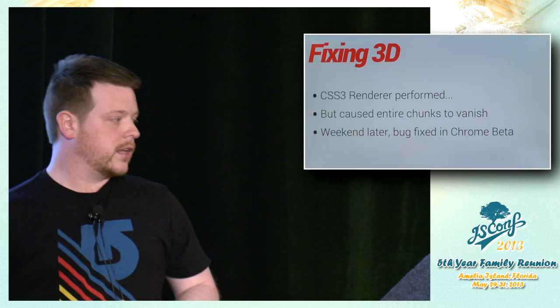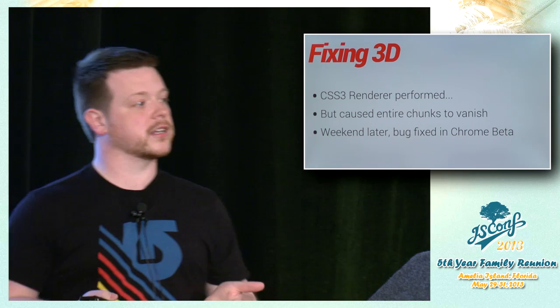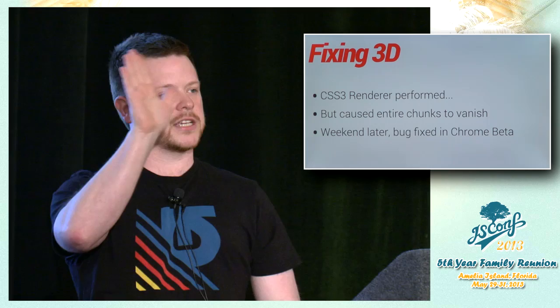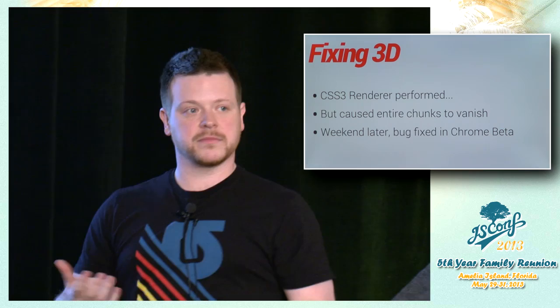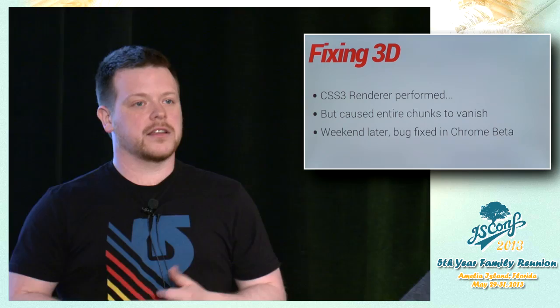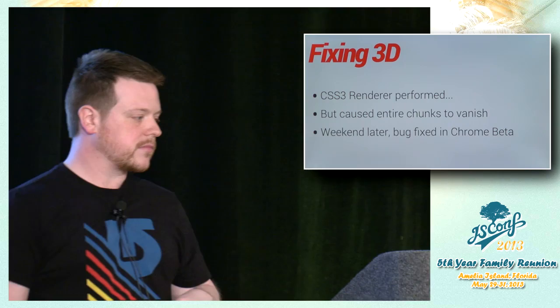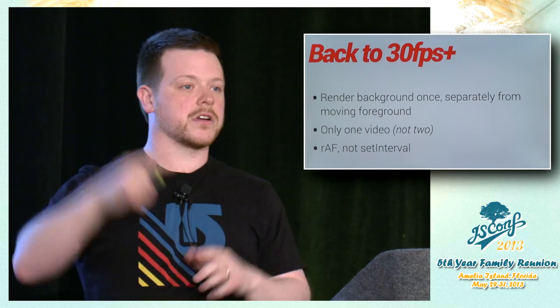This was on Nexus 4 — their hero product. I started looking at the CSS3 renderers, but because I was on an experimental beta browser, it wasn't perfectly working. I found that when my floor was completely flat it was fine, but as soon as I tilted it forward into 3D space it would just vanish. It turned out there was just a bug that had been fixed over the weekend — the coming weekend, I found the issue and it was fixed.